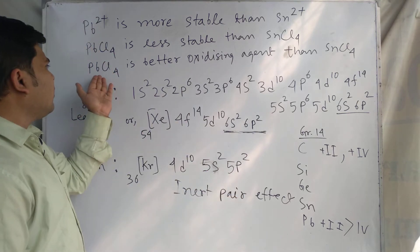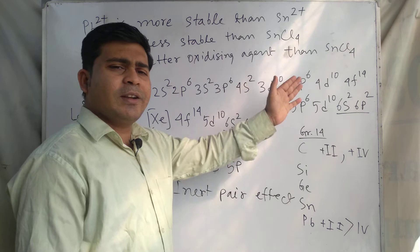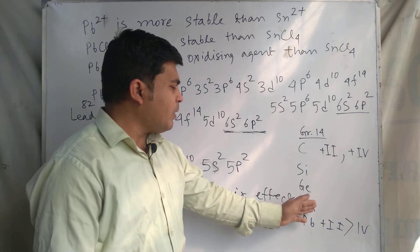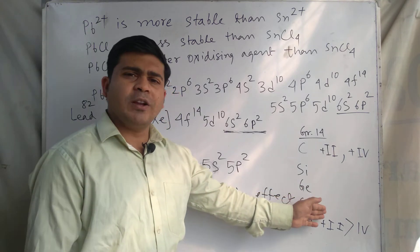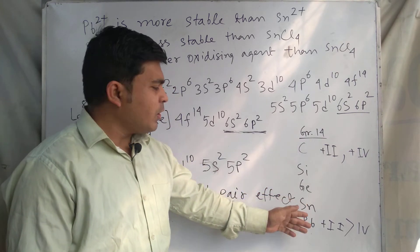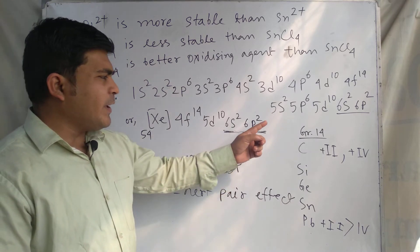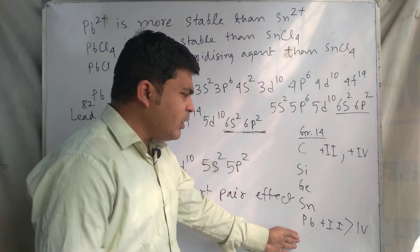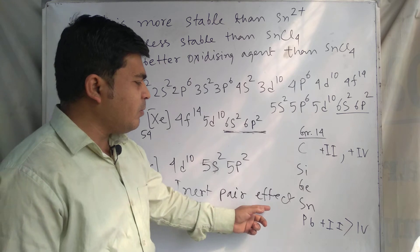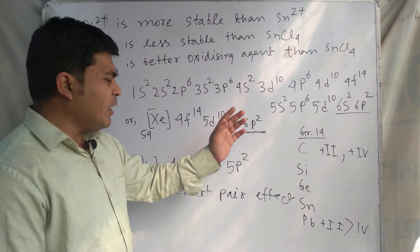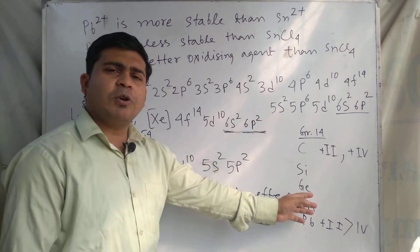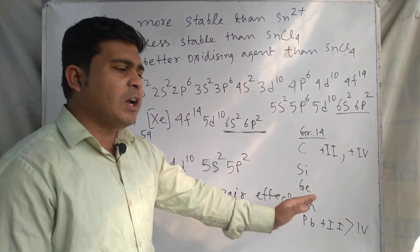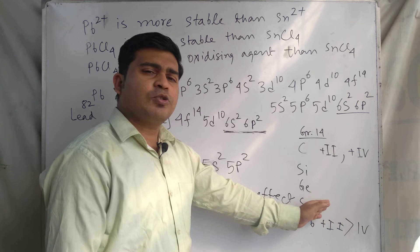For the third question — why PbCl₄ is a better oxidizing agent than SnCl₄ — the answer is that the +2 oxidation state of lead is more stable compared to the +2 oxidation state of tin, because a lesser inert pair effect occurs in tin whereas a greater inert pair effect occurs in lead. Greater inert pair effect means greater stability of the lower oxidation state. Going down the group, the inert pair effect increases, and lead has the maximum inert pair effect in Group 14.